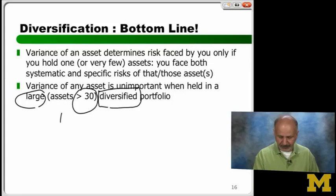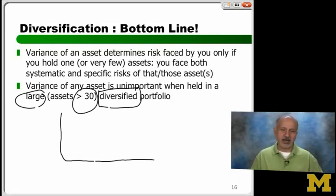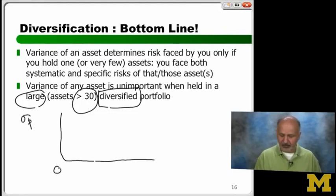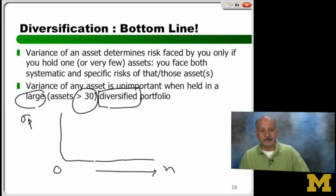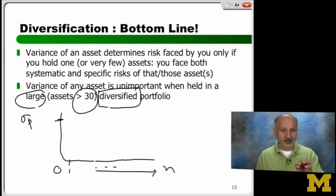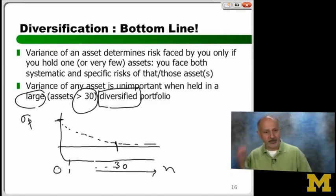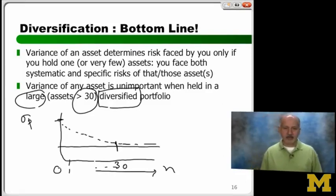Let me show you a little graph, which you should be able to generate if you are good at computing and want to do analysis with a lot of data. Suppose this is the standard deviation of your portfolio and this is the number of securities in your portfolio. It starts off roughly here, and you are randomly choosing — you're drawing this graph many times. Believe it or not, around about 30, your ability to reduce risk starts becoming slow.